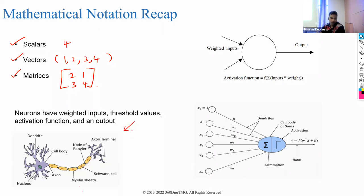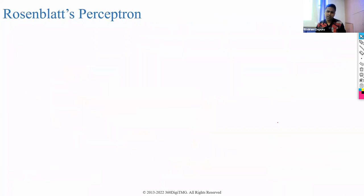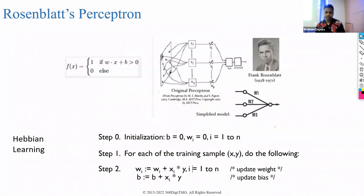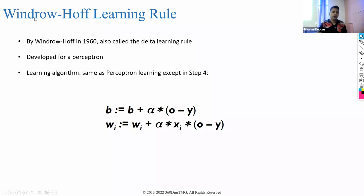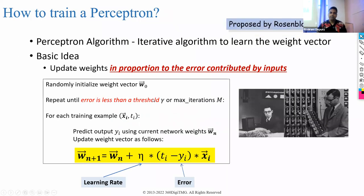This is a biological neuron, and if you look at these two, they look more or less the same — you have inputs that are connected and then finally you get an output. In the early days, people came up with a specific formula to update the weights. Then Widrow-Hoff came up with an improved version, and today we have something proposed by Rosenblatt, which we currently use in the industry.